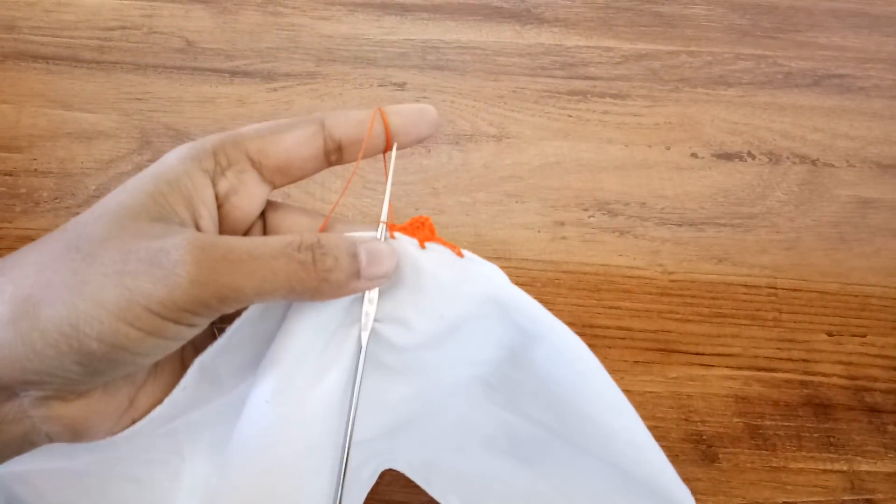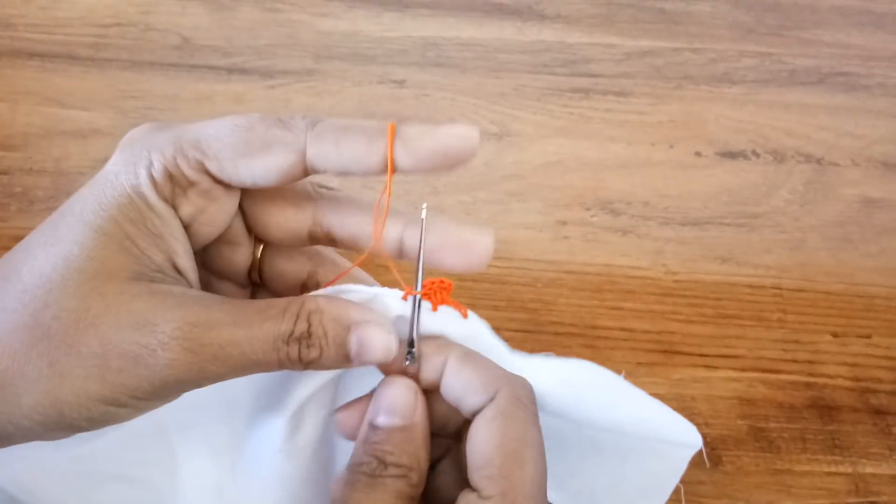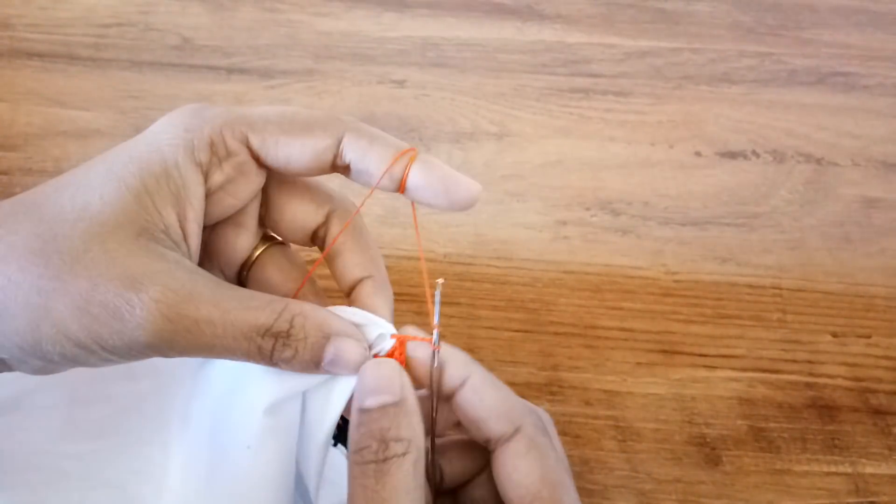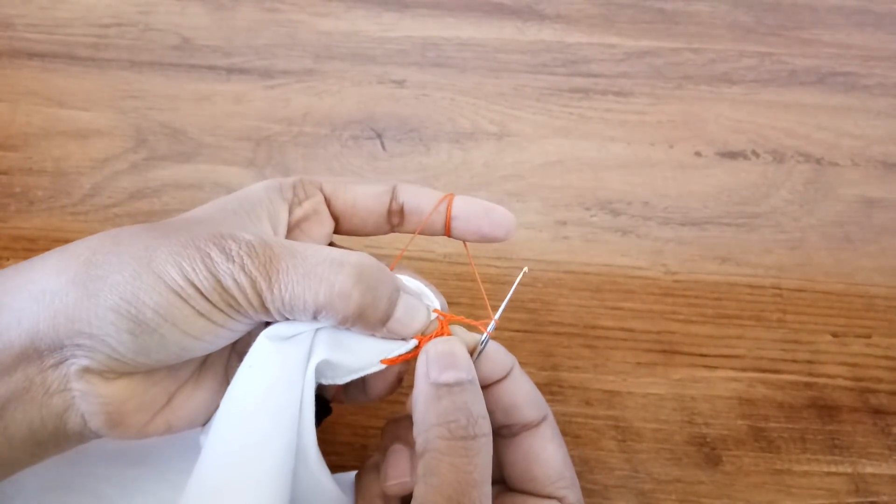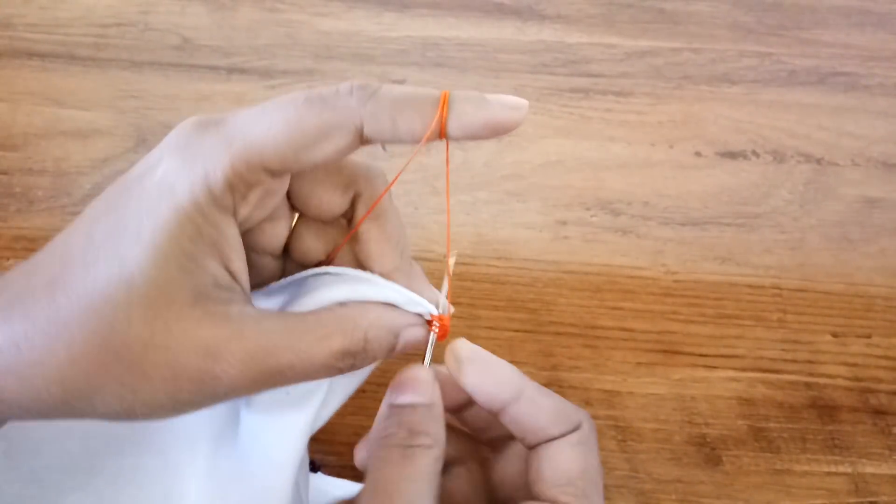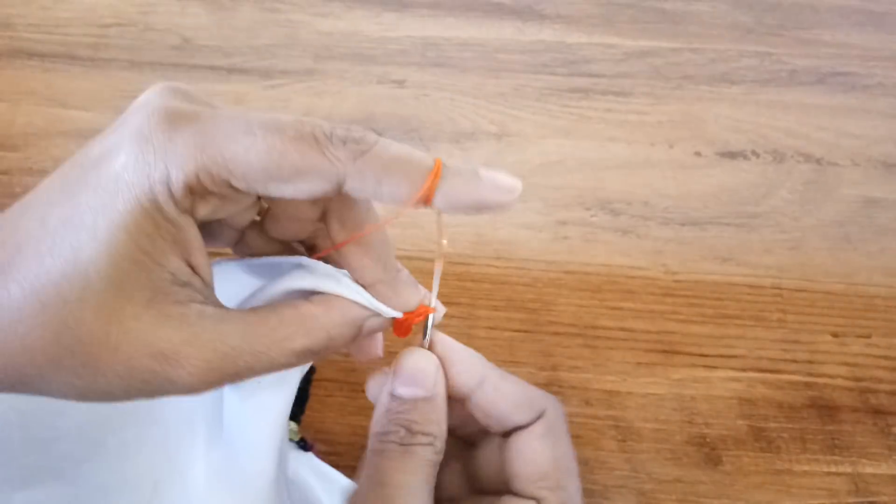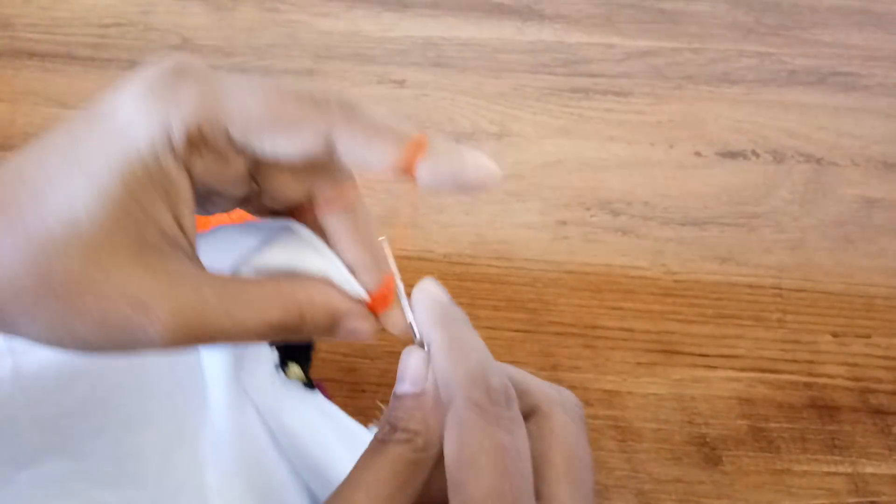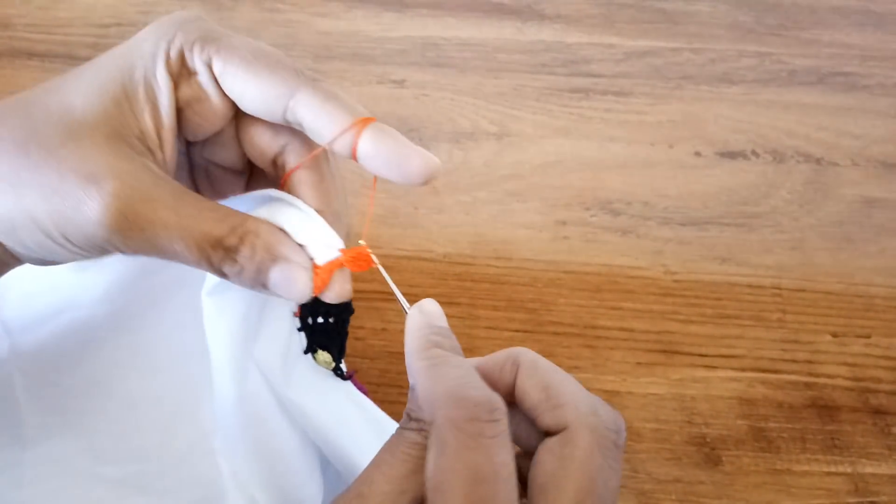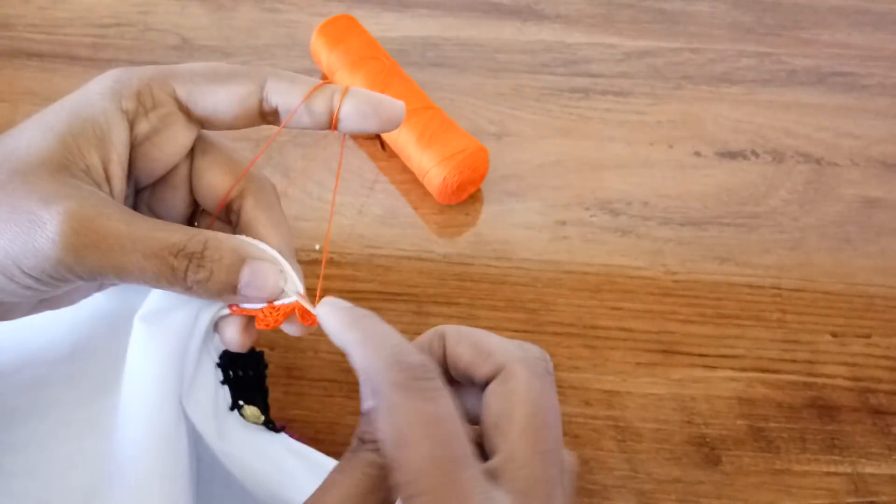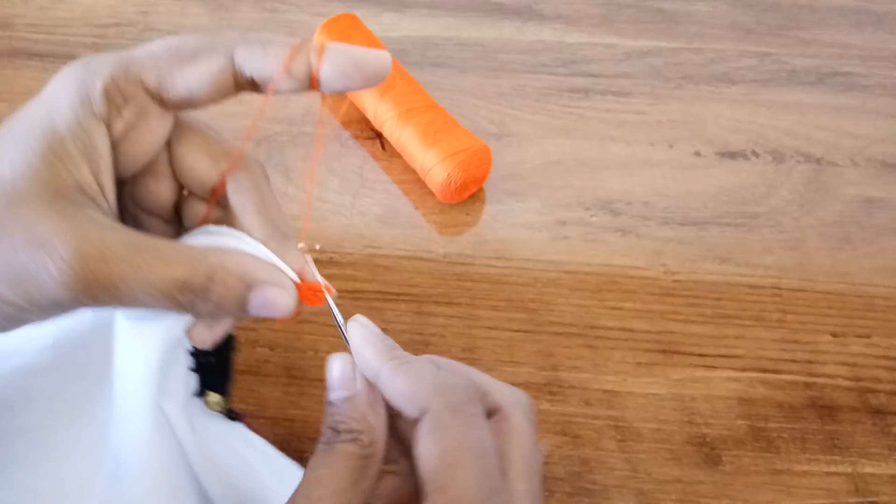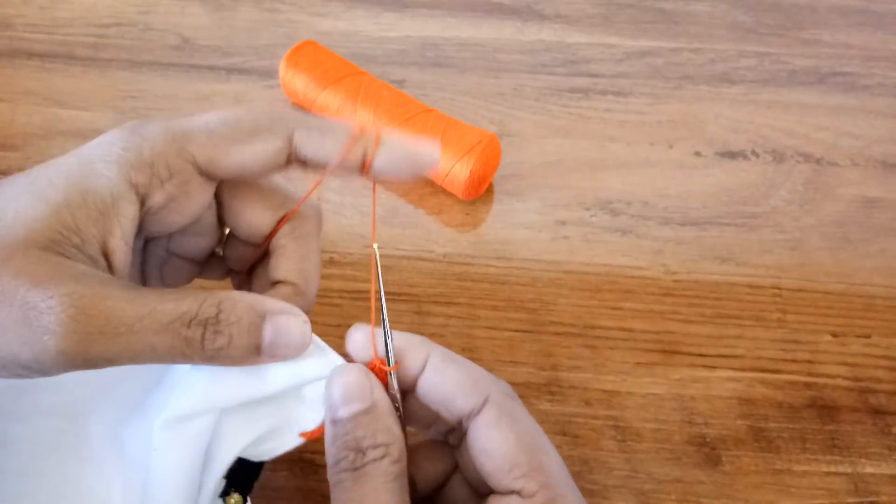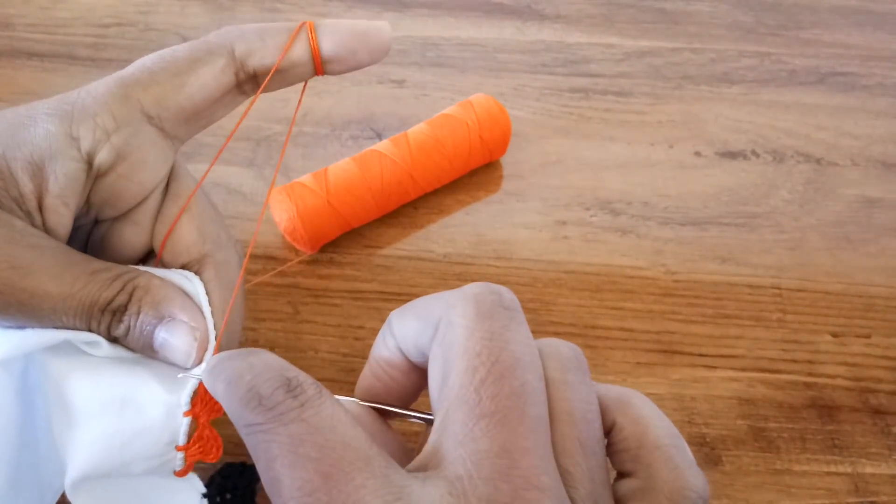Four double crochets. Now make again three chains: one, two, three. And go back to the loop here and make four double crochets. Two. So total we have five double crochets here. Again lock it to the cloth.